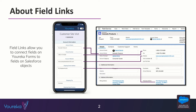The second thing that's really useful about field links is they can pre-populate information from Salesforce onto the form. So in this case, if somebody were to open up that form — that customer site visit — and the form is related to that particular account, those four fields would actually be pre-populated with that account data. There's a lot of usefulness that comes with the field link feature.